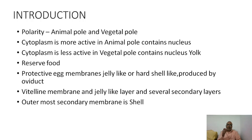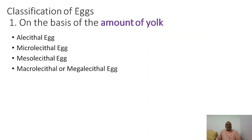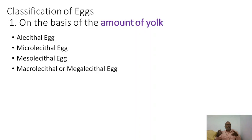Classification of eggs is done in three different ways: first, on the basis of the amount of yolk; second, on the basis of the distribution of yolk; and third, on the basis of the developmental pattern after fertilization.